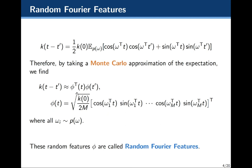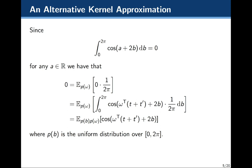We can rewrite the kernel as an inner product of functions which we'll call phi, where phi is defined as the cosine and sine of these values, with all constants placed at the front. If we expand phi(t) transposed times phi(t'), we recover the Monte Carlo approximation of our original kernel. These features defined by phi are what we call the random Fourier features, or RFF. We've mapped our original observations into a finite-dimensional feature space, because we've cut our Monte Carlo approximation off at M.